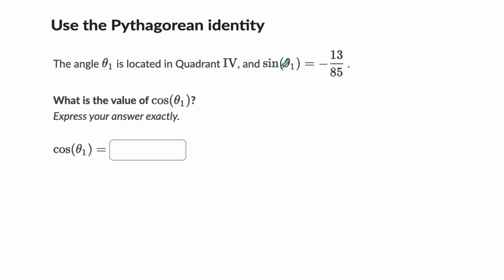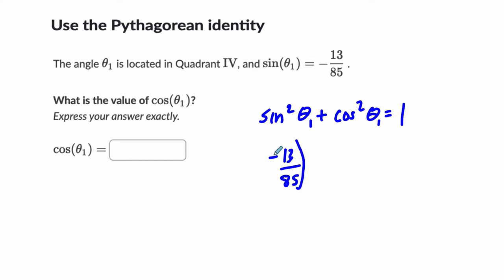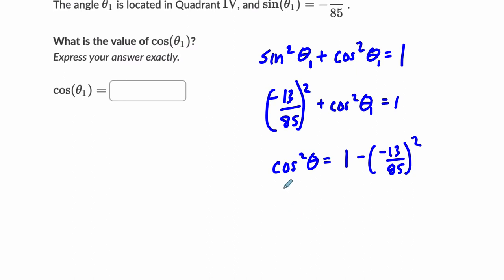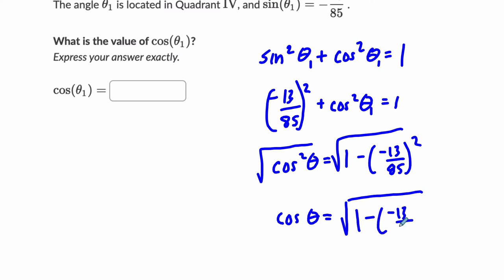So here, if the sine of theta is negative 13 over 85, you could use this identity. Sine squared of theta one plus cosine squared of theta one has to equal one. So you could say the sine squared of theta equals negative 13 over 85 squared, plus the cosine squared of the same angle, equals one. You can solve for cosine squared of theta by subtracting this from both sides — it's going to be one minus (negative 13 over 85) squared. That gives you the cosine squared, and then you square root both sides. The cosine of theta equals the square root of one minus (negative 13 over 85) squared.